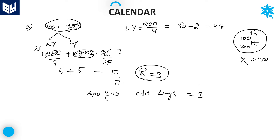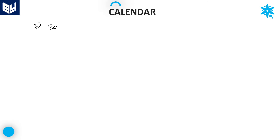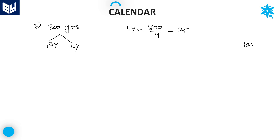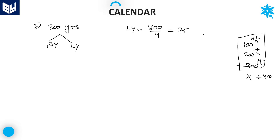Now let us see 300 years. In 300 years, 300 divided by 4 = 75. But out of these 300 years, there are 3 centuries — the 100th, 200th, and 300th years. These 3 centuries are not divisible by 400, so they are not leap years. Therefore, number of leap years = 75 minus 3 = 72. The remaining 228 years are normal years.